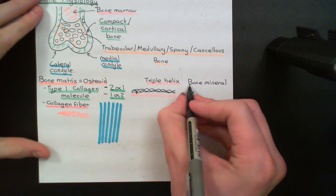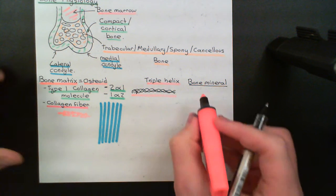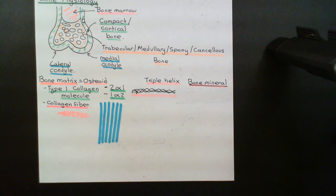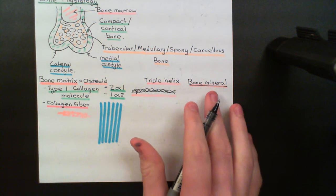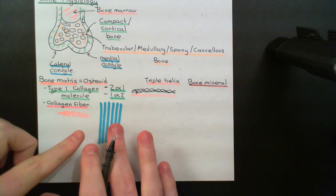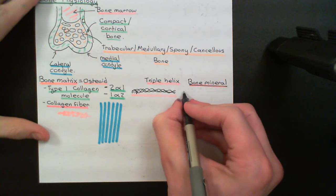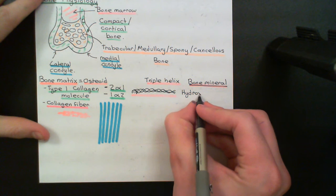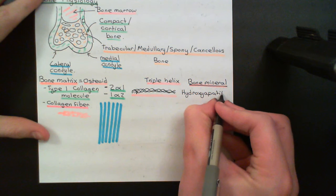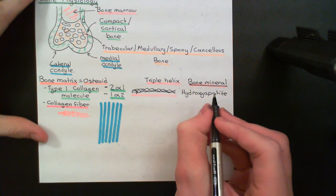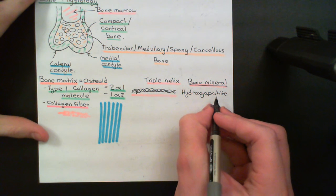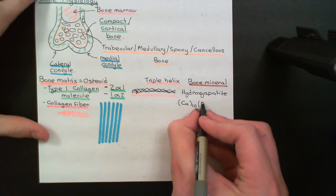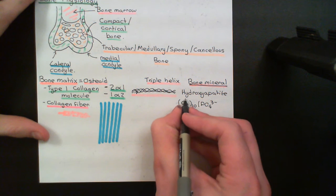Bone mineral is an ionic compound known as hydroxyapatite, and hydroxyapatite is what contains the calcium. We know that a huge amount of calcium is stored in bone — that calcium is part of the bone mineral, part of the ionic crystal that intertwines with the collagen matrix. Hydroxyapatite consists of three different ions: calcium ions (Ca²⁺), phosphate ions (PO₄³⁻), and hydroxide ions (OH⁻), in the stoichiometry Ca₁₀(PO₄)₆(OH)₂.